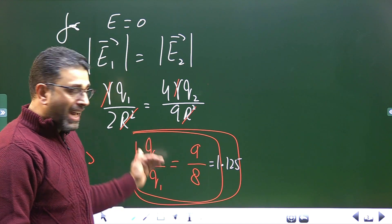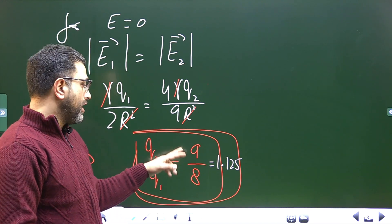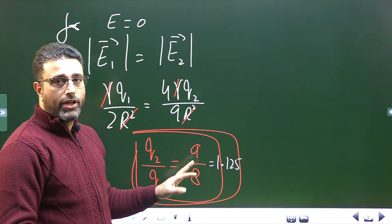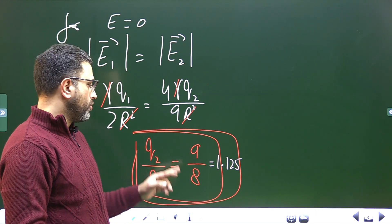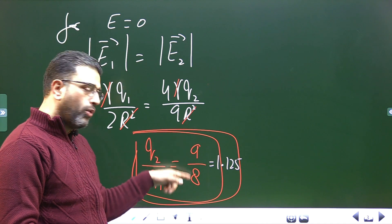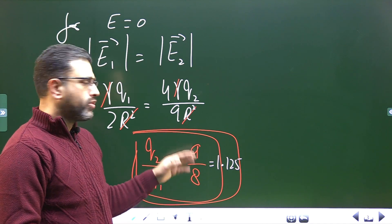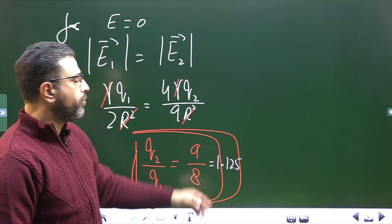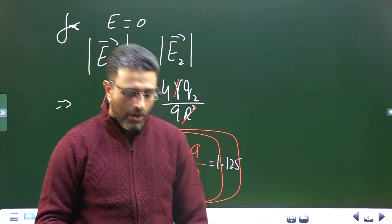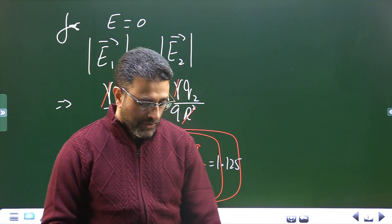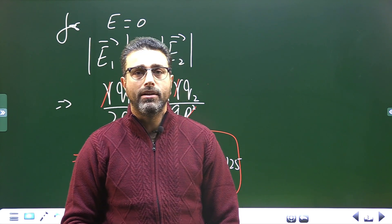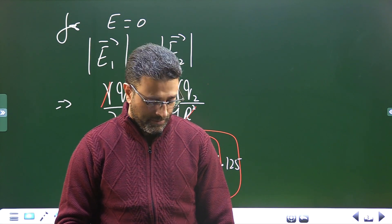Since both charges are like charges, the ratio remains positive. So Q2/Q1 = 9/8, or 1.125. That is what we are asked to find. That will do for this session.